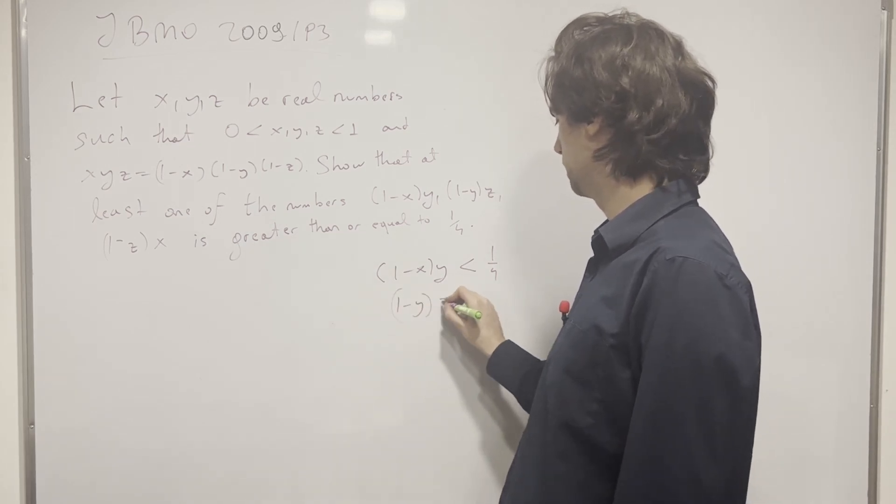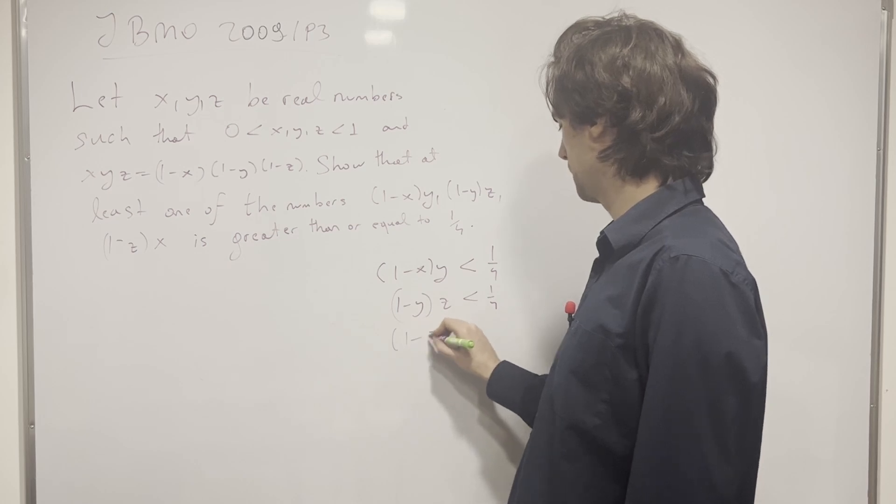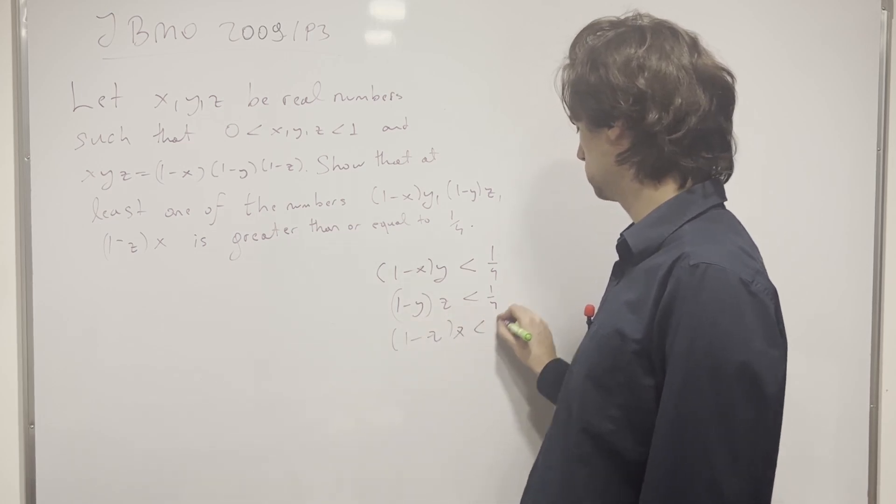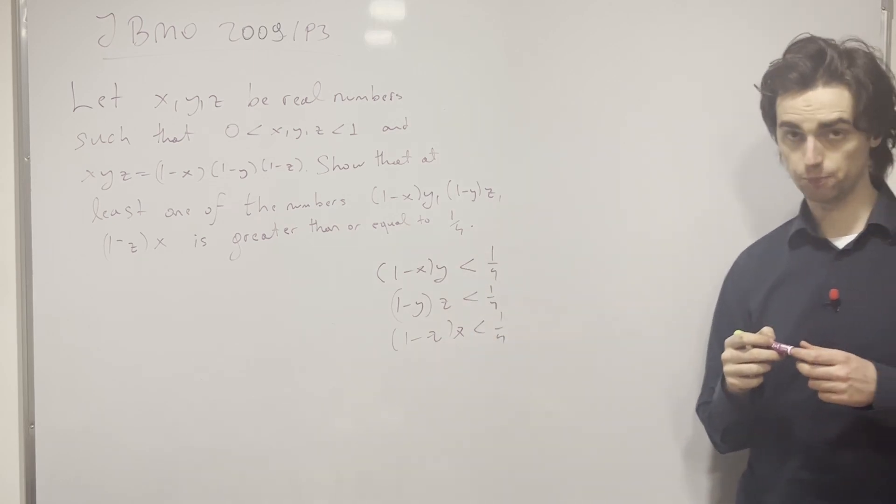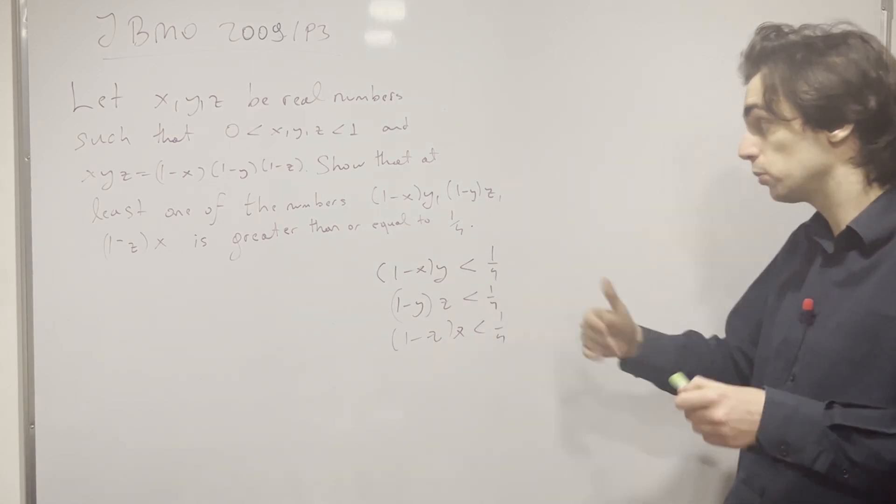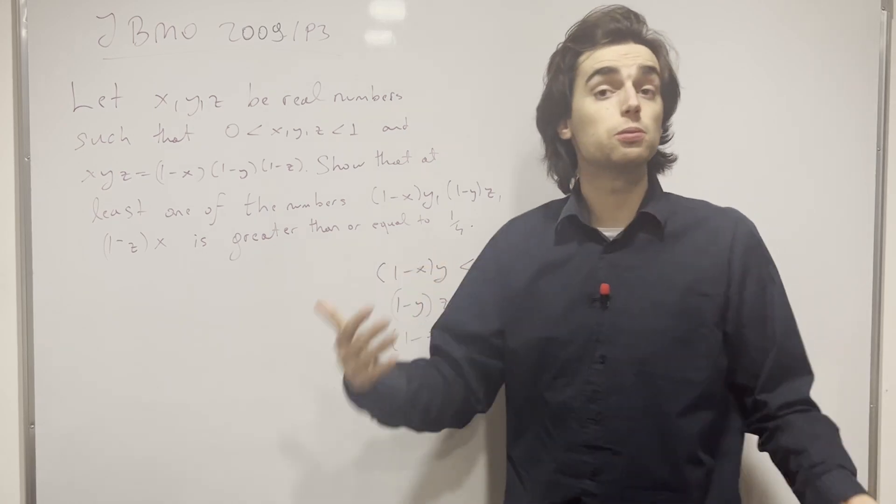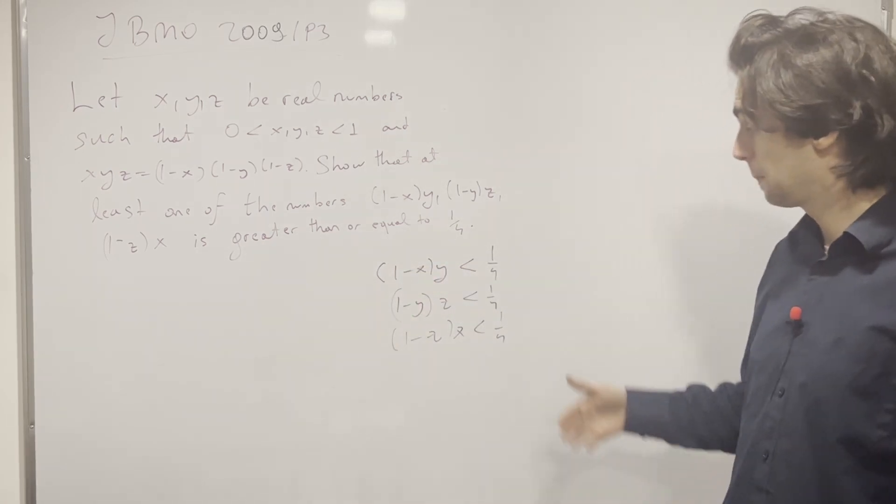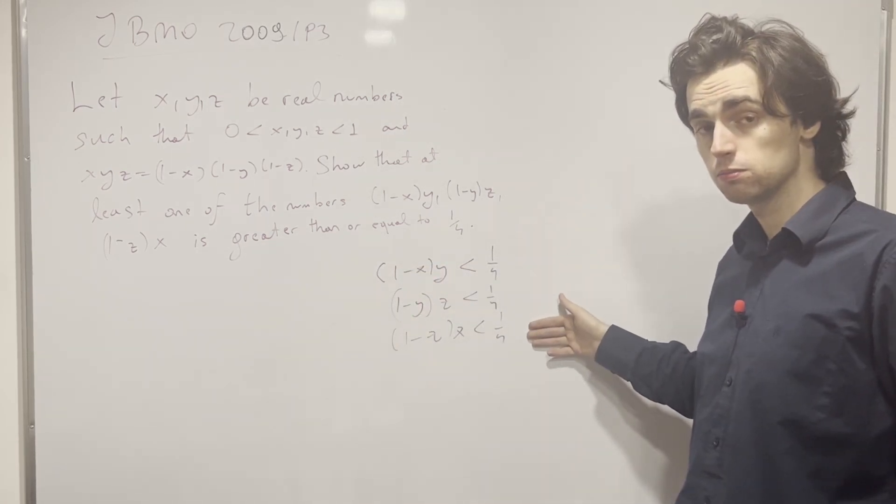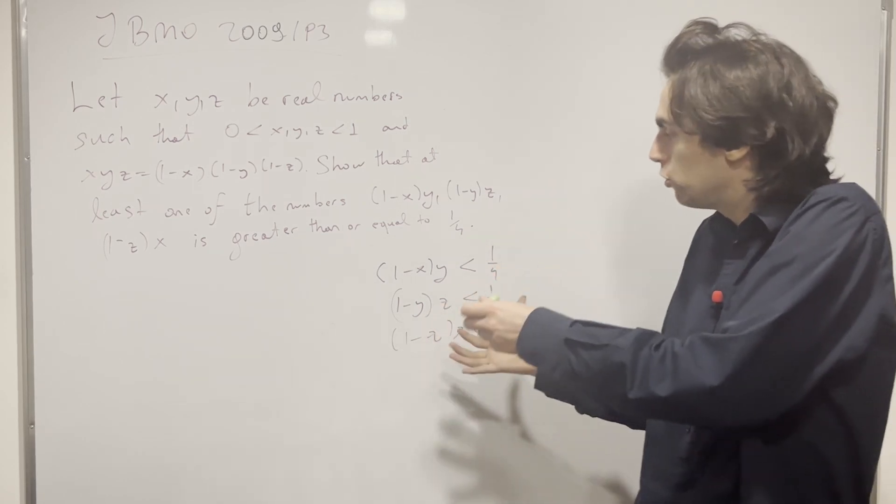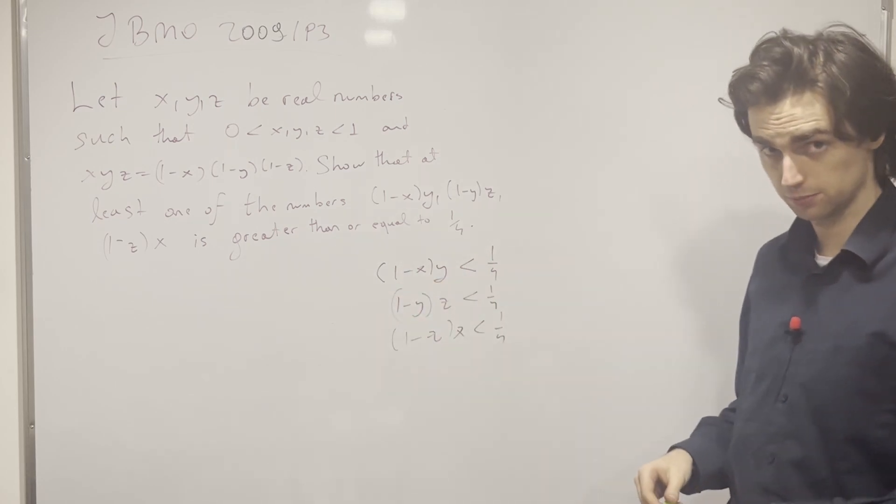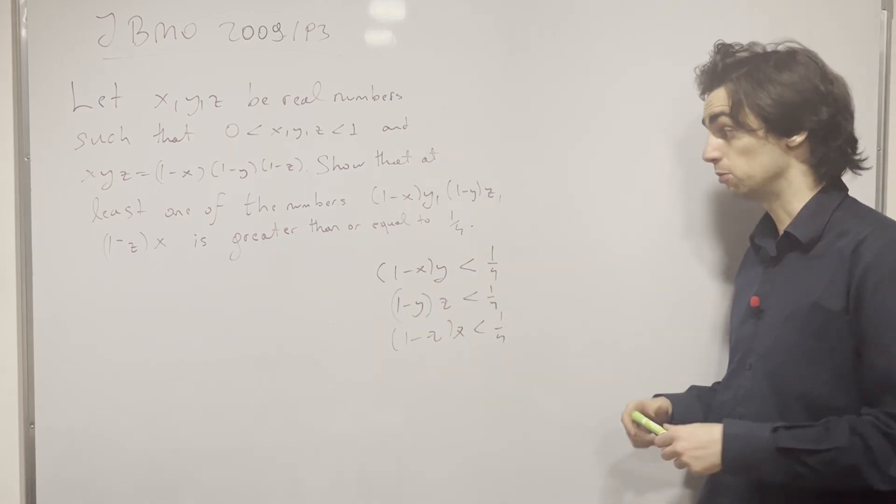1 minus y times z is less than 1 over 4. 1 minus z times x is less than 1 over 4. What do I get from this, right? I'm assuming the contrary to see if I can get to some sort of contradiction. Now, what does this give me? I invite you here, pause for five to ten minutes and see if there's some way that you can use this fact, okay? Now, hope that you've paused.